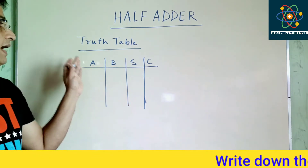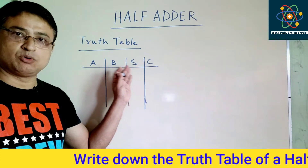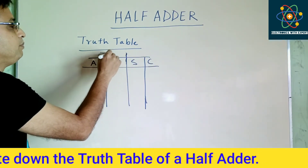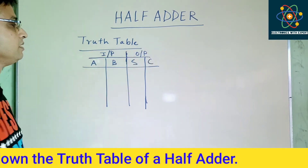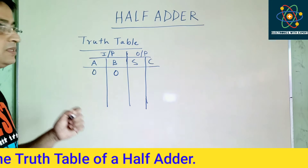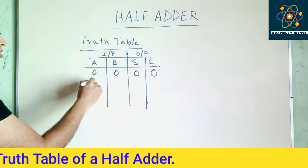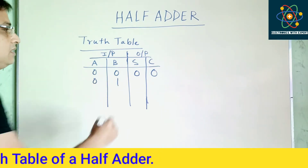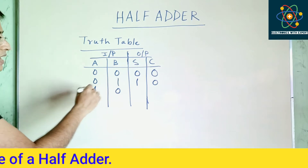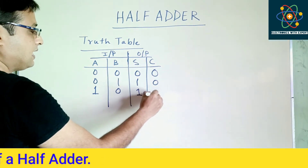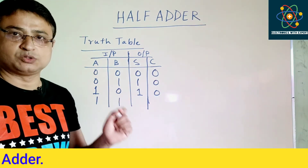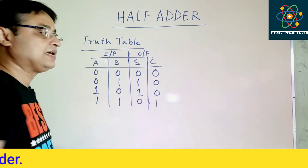This is the truth table where A and B are 2 binary numbers, S is the sum output and C is the carry output. When A and B are both 0, then 0 plus 0 gives sum 0, carry 0. When 0 is added with 1, sum is 1, carry 0. Similarly 1 plus 0 gives sum 1, carry 0. But when both A and B are 1, then 1 plus 1 equals 10 in binary, so sum is 0 and carry is 1.